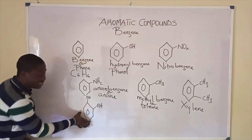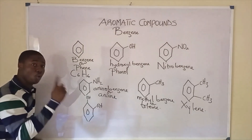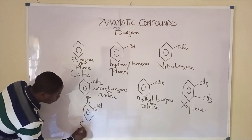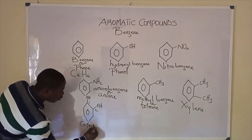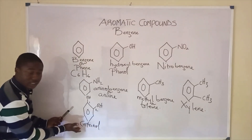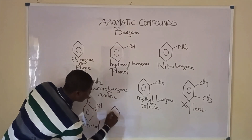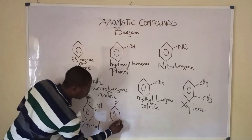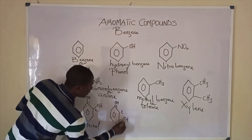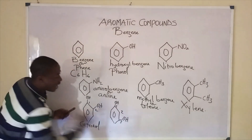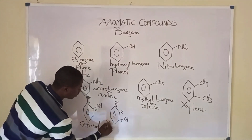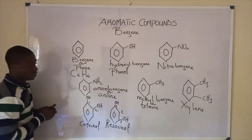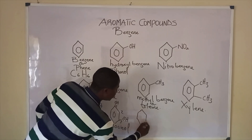This is a benzene structure attached to two OH groups at carbon 1 and carbon 2, called catechol. This is another benzene derivative with two OH groups at carbon 1 and carbon 3, and this compound is called resorcinol.